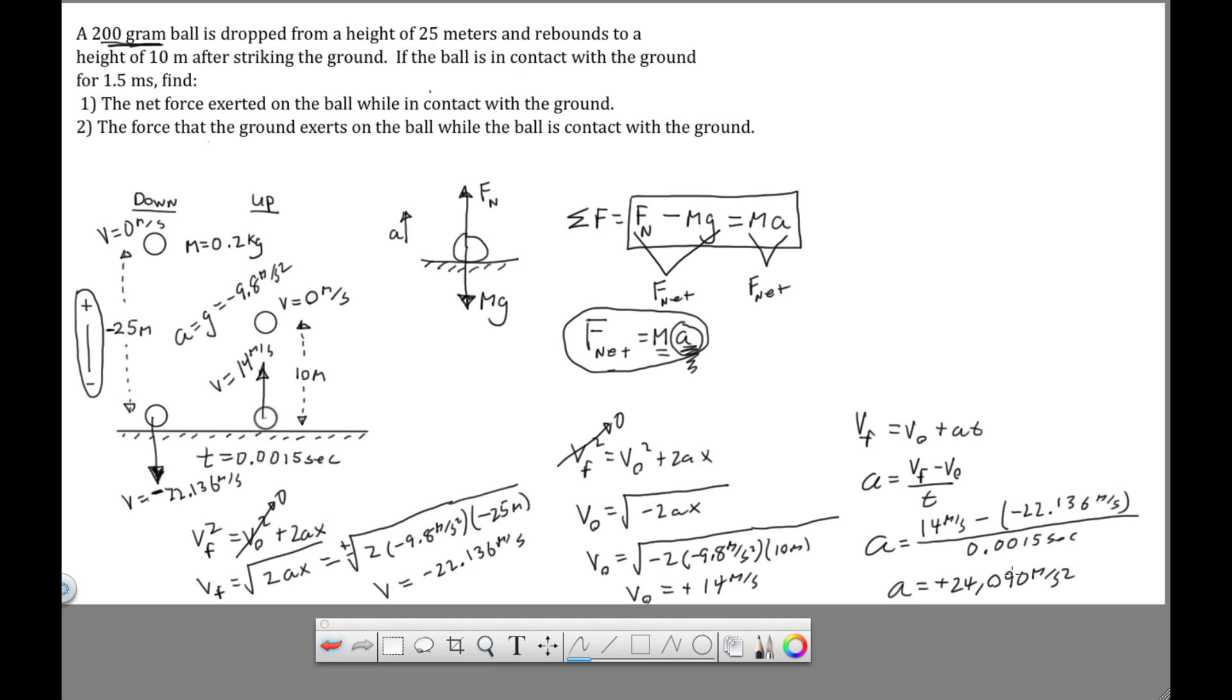And this gives an acceleration of 24,090 meter per second squared. So that's a really large acceleration. And the reason for that is because our time of contact is so small. The velocity changes in a millisecond. So now that we have the acceleration, we can solve for the net force. So net force equals ma. The mass of the ball is 0.2. Acceleration, we determined to be 24,090. So this gives a net force of 4,818. And that is the answer to the first question.